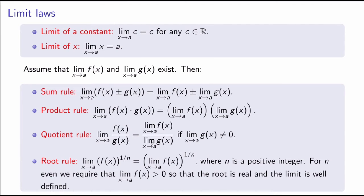Otherwise on the right-hand side I would be dividing by zero. The last one is the root rule, which says that the limit as x approaches a of the n-th root of a function is equal to the n-th root of the limit. There's a subtlety: n is an arbitrary positive integer, but if n is even, I need to require that the limit as x approaches a of f of x is greater than zero — otherwise the root would not be real and the limit would not be well defined.